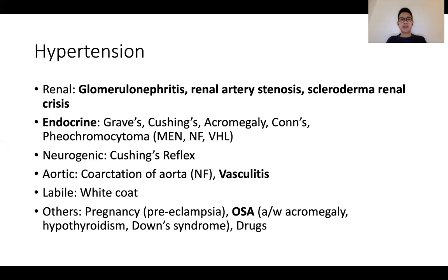The second group of endocrine disorders are multiple — conditions such as Graves' disease, Cushing's, acromegaly, Conn's syndrome, and phaeochromocytoma can all cause hypertension. Taking a targeted history to elicit these endocrinological disorders is important. Neurogenic causes are not that common; patients with raised intracranial pressure can get Cushing's reflex causing hypertension. For aortic disorders, I would say two big groups: coarctation of the aorta as well as vasculitis — such as Takayasu's, which is an important cause of hypertension to consider in the PACES exam, where one might see symptoms such as claudication or other systems being affected, and evaluating the pulses methodically.